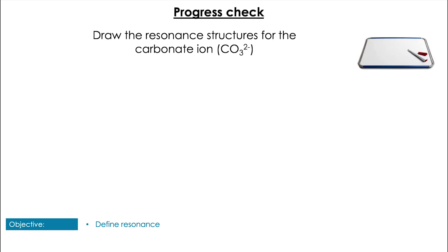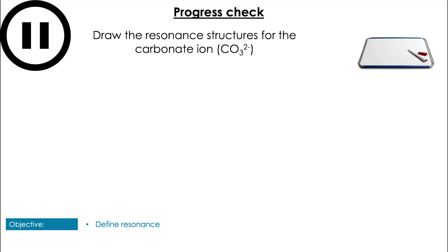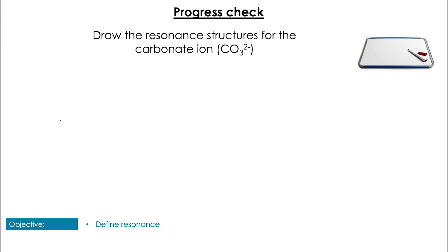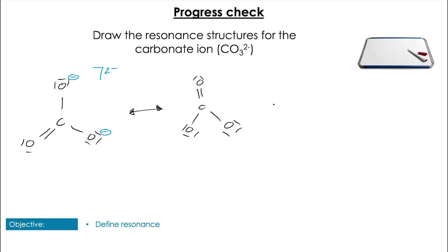Next question: try the same thing with the carbonate ion — that's CO3 2 minus. Remember to draw the Lewis structure first and then your resonant structures from there. So for the Lewis structure of the carbonate ion we have the carbon in the center with three oxygens, two single bonds and one double bond. The two singly bonded oxygens have a negative charge giving the overall ion a two-minus charge, and there is a three-way symmetry in this molecule so we can switch the double bond for any of the previously single bonds, giving the carbonate ion three resonance structures.